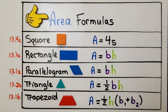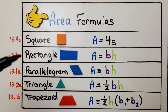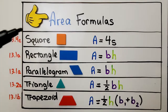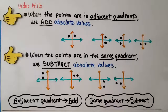To do this lesson, we're going to need to have our area formulas nearby. You can take a screenshot of this if you need, and we covered all these in chapter 13. To find lengths for these formulas, we're going to be adding and subtracting absolute values.